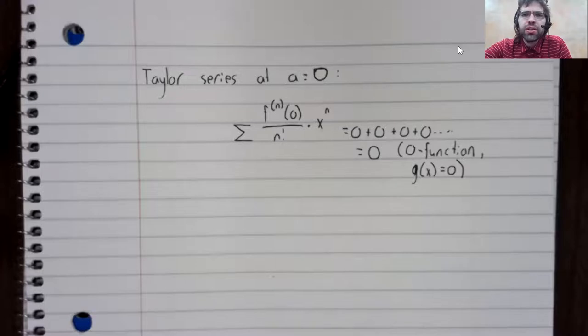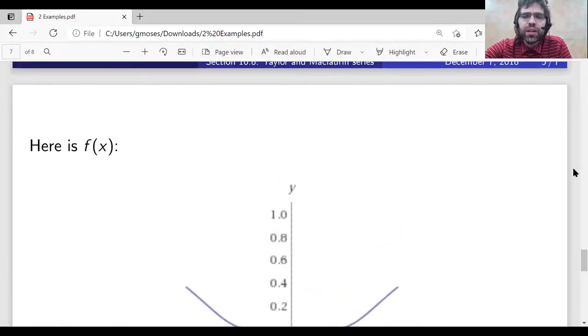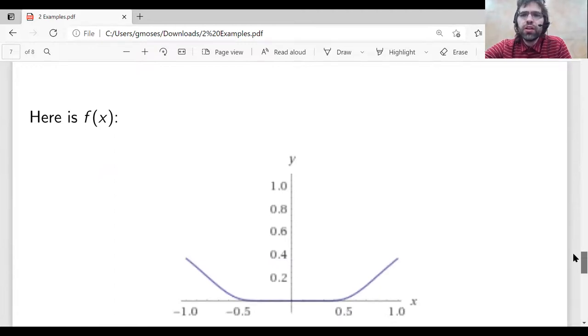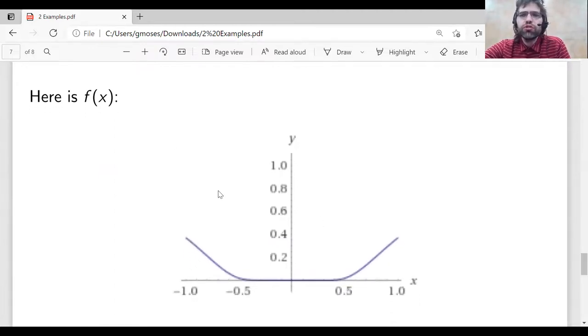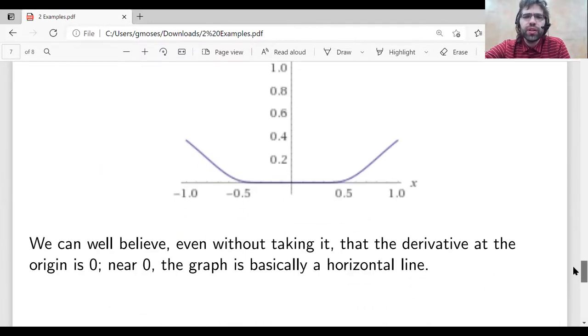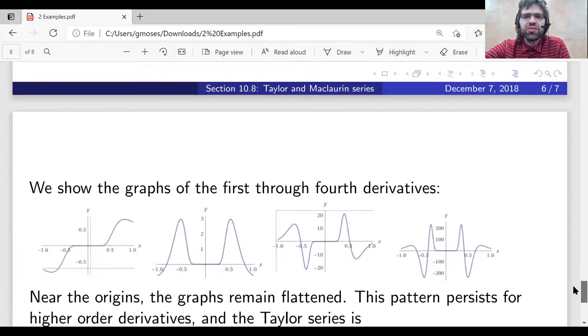Let me get those notes back again. Clearly, this original function, the function we use to create this Taylor series, is not the zero function. In fact, this function only has a single root at the origin. So it is possible to create functions such that the function does not equal its own Taylor series. We'll discuss that a little more in the next section.